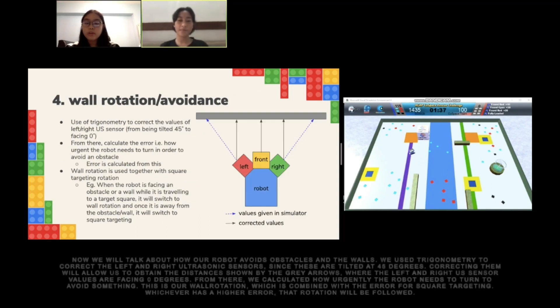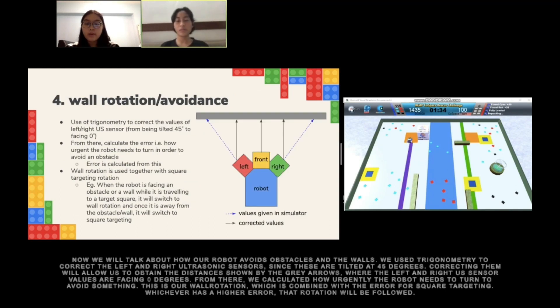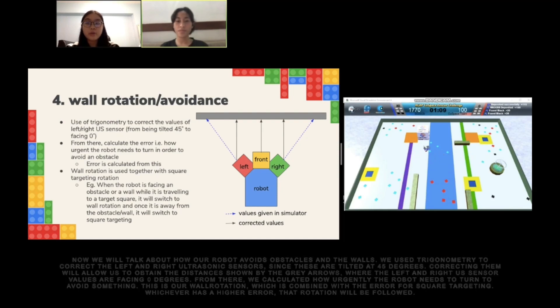Now, we will talk about how our robot avoids obstacles and walls. We use trigonometry to correct the left and right ultrasonic sensors since these are tilted at 45 degrees. Correcting them will allow us to obtain the distances where the left and right ultrasonic sensors are facing perpendicular. From there, we calculated how urgently the robot needs to turn to avoid something. This is our wall rotation, which is combined with the error for square targeting. Whichever has a higher error, that rotation will be followed.